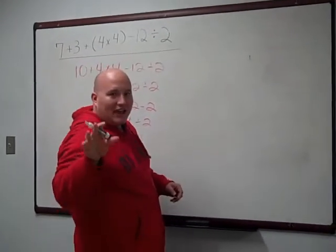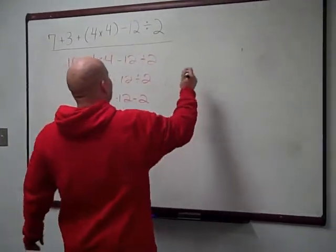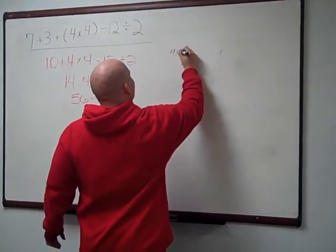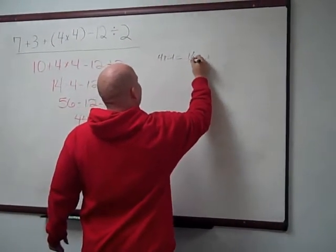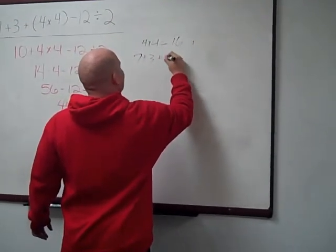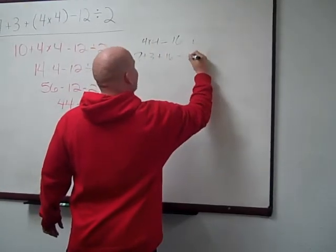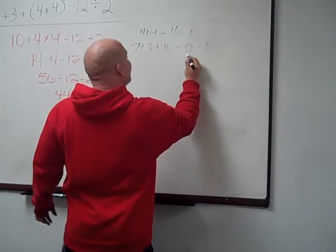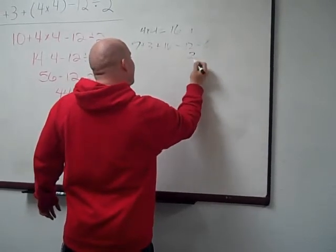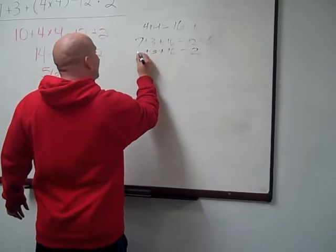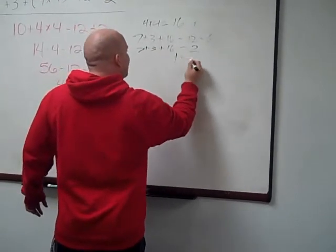Now, Aunt Sally, what you're going to do is use parentheses first. So you're going to do 4 times 4 is equal to 16. And you're going to come down with 7 plus 3 plus 16 minus 12 divided by 6. You're going to take 12 divided by 6. It's going to be 2 minus 16 plus 3 plus 7. This will give you 14.